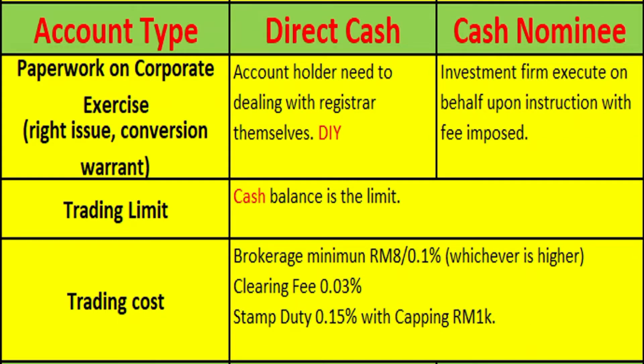For corporate actions like rights issues or warrant conversions, direct cash account holders need to handle these by themselves. For rights issues, they may use their mobile phone by downloading the Bursa Anywhere app to apply for e-rights. For warrant conversions, investors need to deal directly with the registrar company.